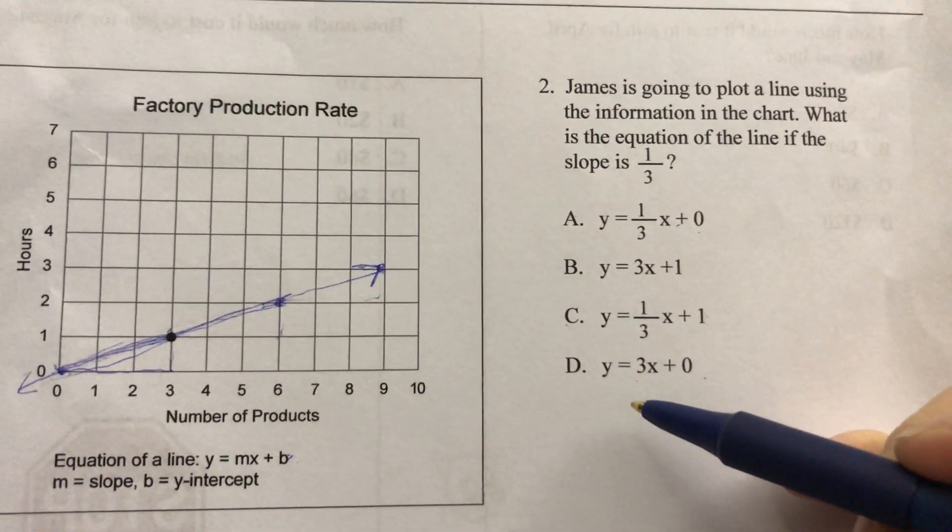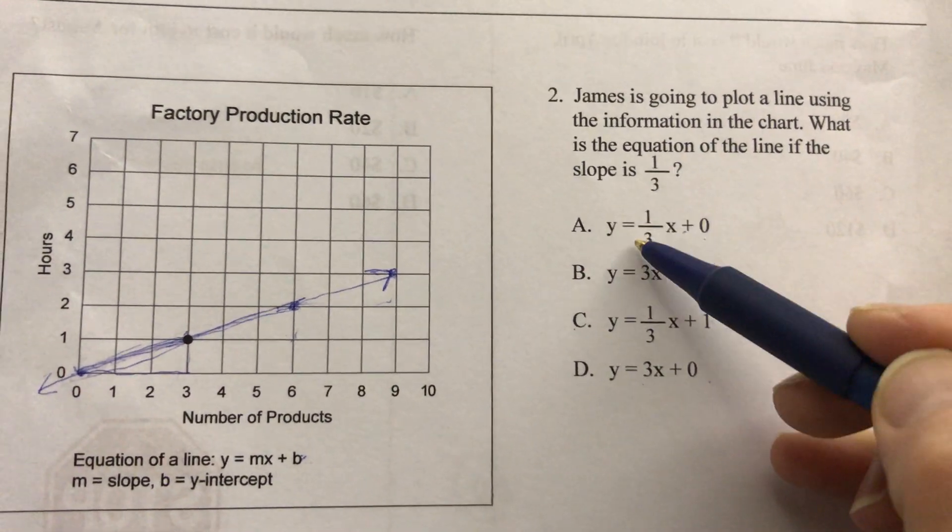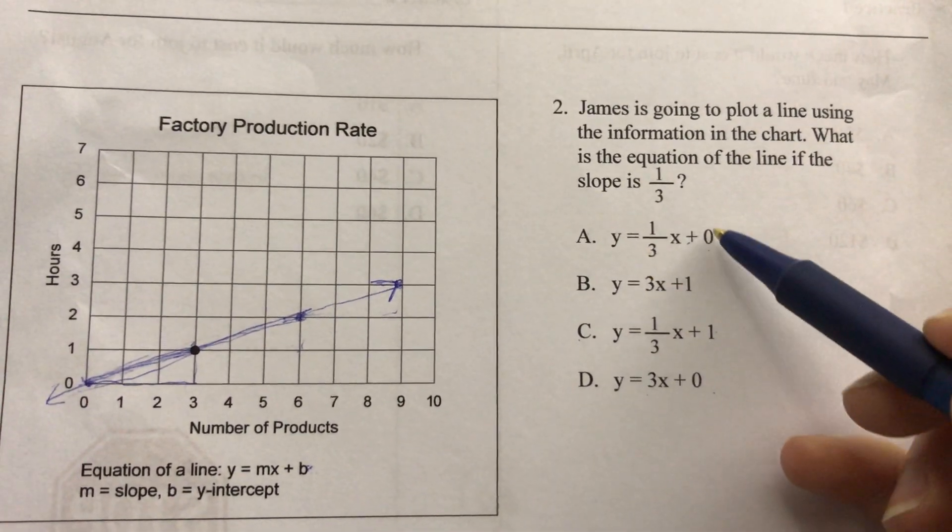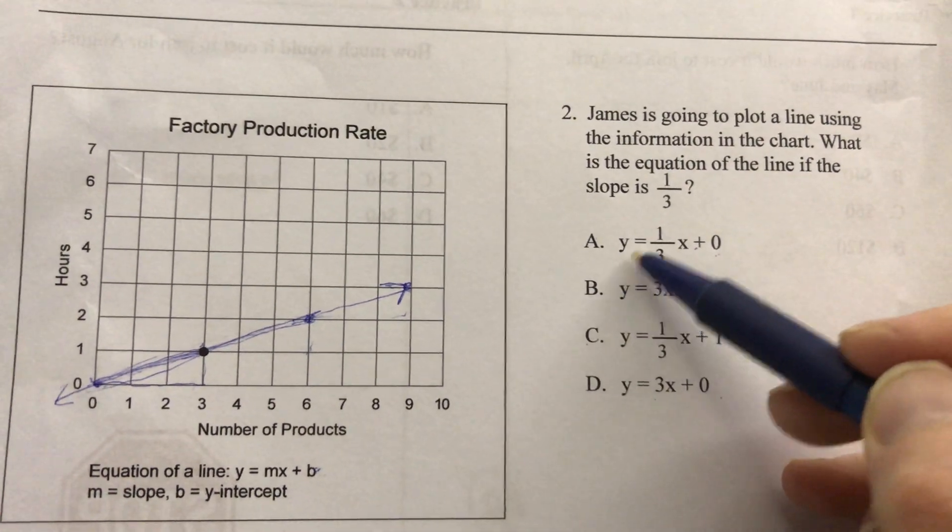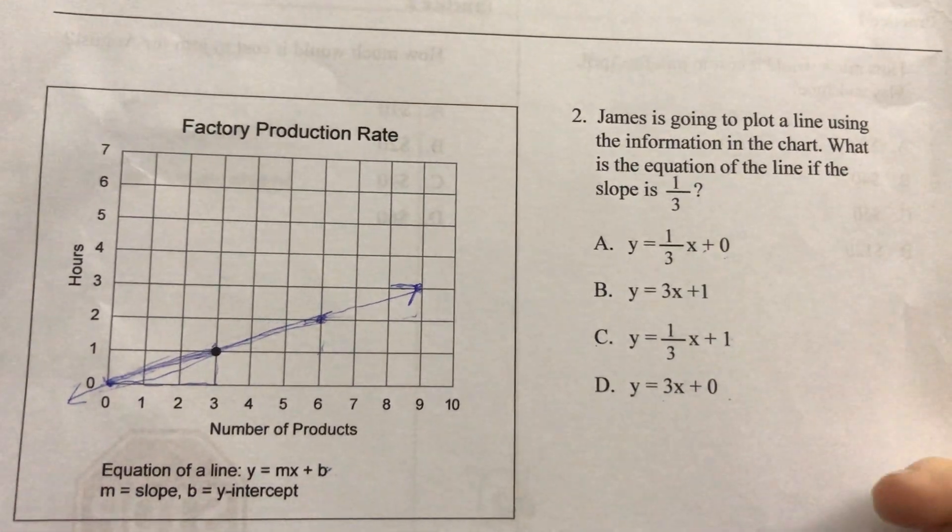So which line has a slope of one third and a B value of zero? It is A. So y equals one third x plus zero.